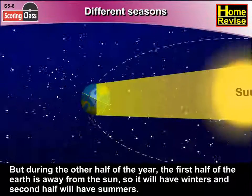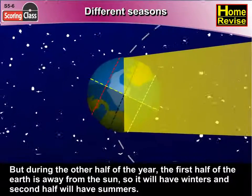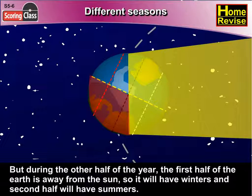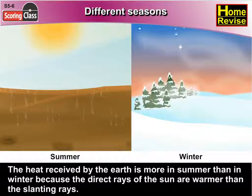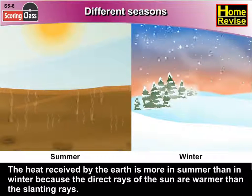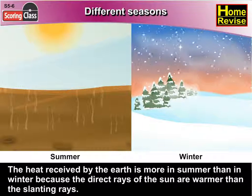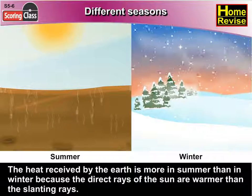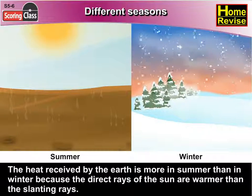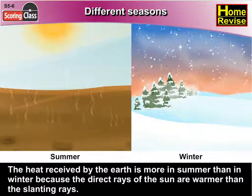But during the other half of the year, the first half of the earth is away from the sun, so it will have winters and the second half will have summers. The heat received by the earth is more in summer than in winter because the direct rays of the sun are warmer than the slanting rays.